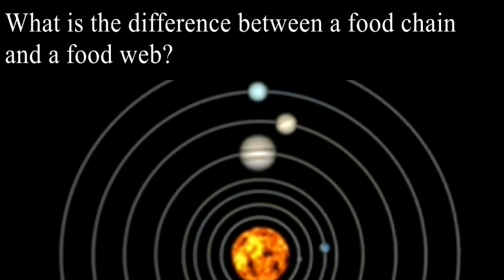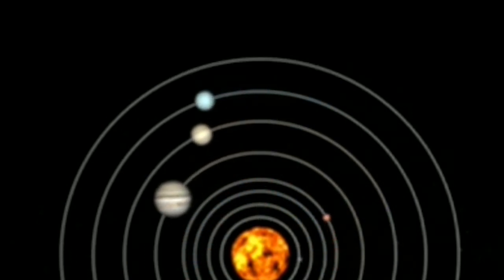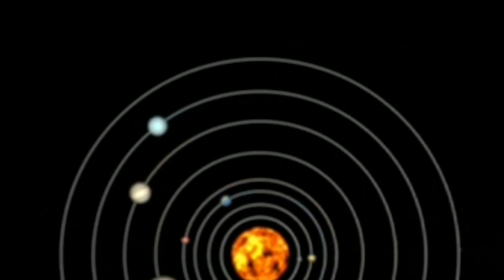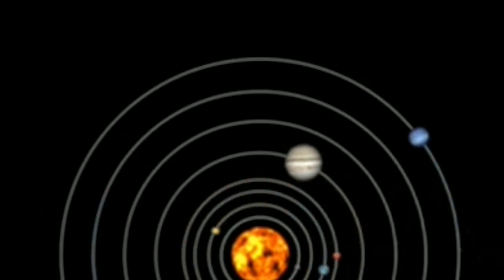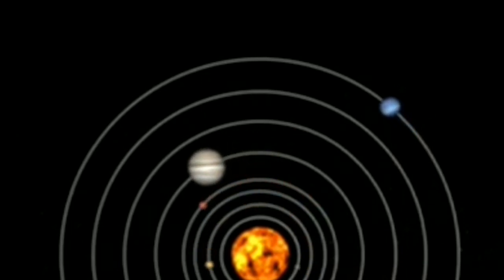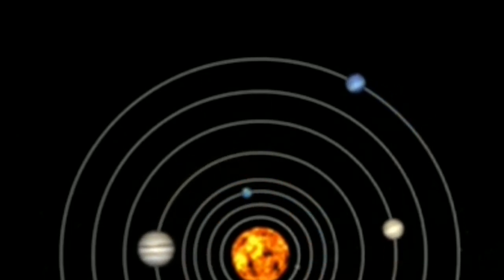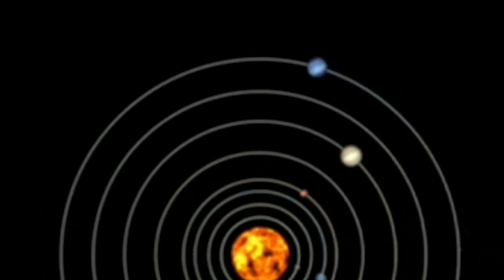Next question: What is the difference between a food chain and a food web? You can say a food chain is a linear sequence of organisms, each of which is a food source for the next, or a food web is a more complex network of interconnected food chains that shows the relationship between multiple species in an ecosystem.